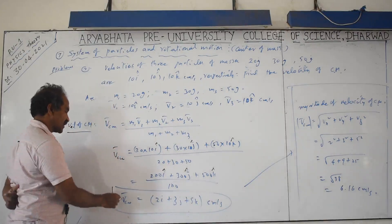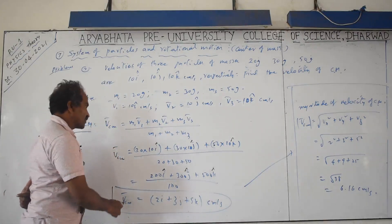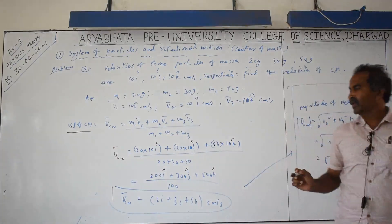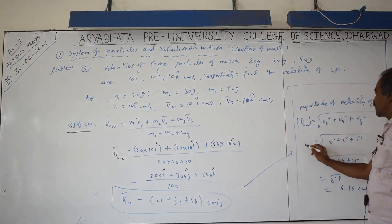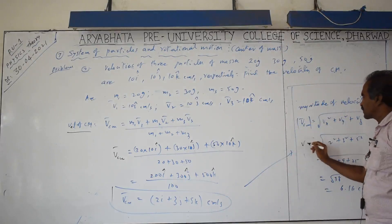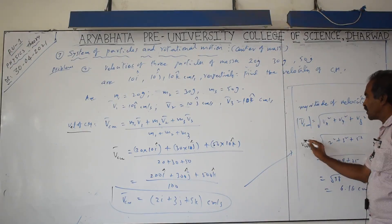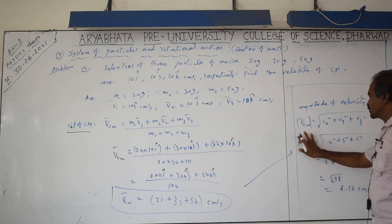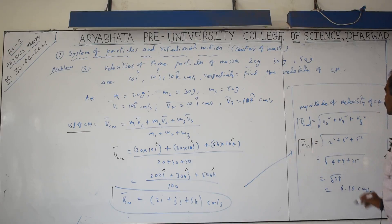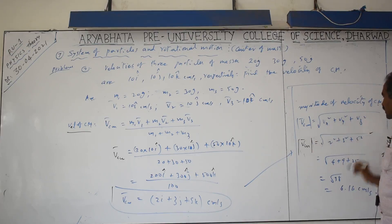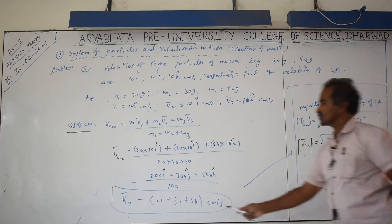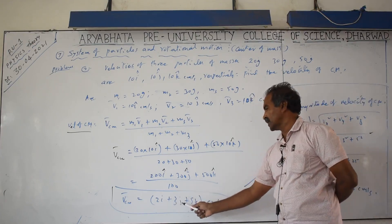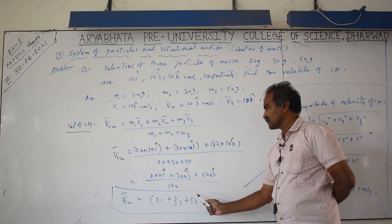To calculate the magnitude of the resultant velocity of center of mass, use |v_cm| = √(vx² + vy² + vz²). You can write v_cm without the bar to indicate magnitude, or use modulus notation. The x-component is 2, y-component is 3, and z-component is 5.